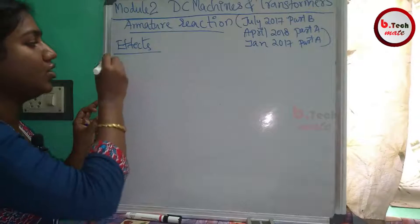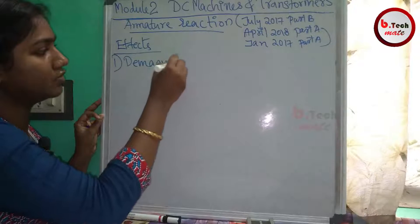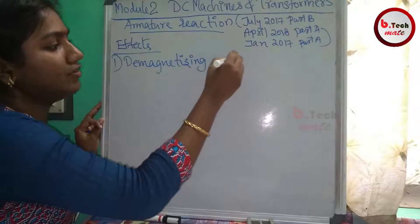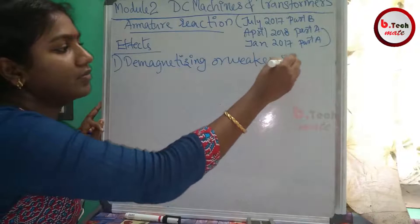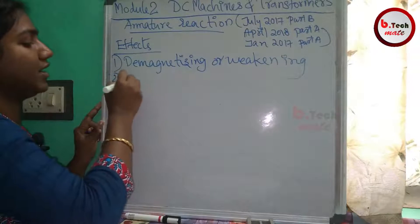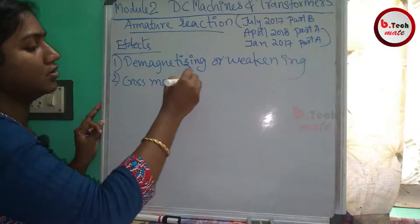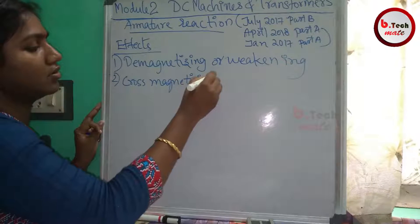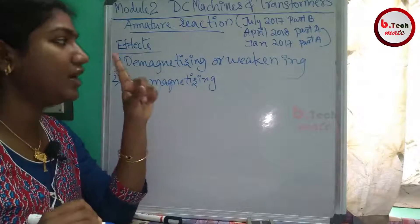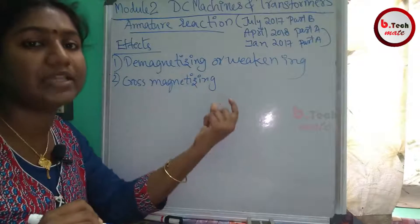The effect of armature flux on the main flux is called Armature Reaction. There are two effects of Armature Reaction: Cross Magnetizing and Demagnetizing. The main flux is affected in both cases.